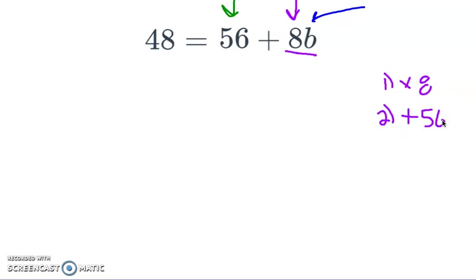Well, I need to undo both of those things, but to undo stuff, you kind of have to undo them in reverse order of how they happened. So we multiplied first by 8, and then we added 56. So what we're going to do is take care of the adding 56 first. Well, how do you un-add 56? You subtract 56. So I'm going to subtract 56 from 56.